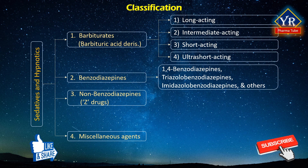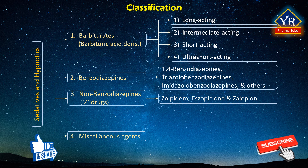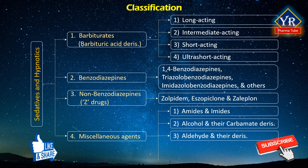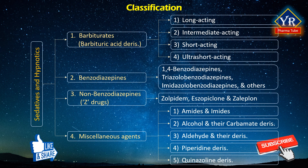Non-benzodiazepines are also called Z-drugs, as these drugs' chemical names start with the letter Z. They are zolpidem, eszopiclone (the active isomer of zopiclone), and zaleplon. The fourth and last group — miscellaneous agents — includes different classes of compounds such as amides and imides, alcohols and their carbamate derivatives, aldehydes and their derivatives, piperidine derivatives, and quinazoline derivatives.